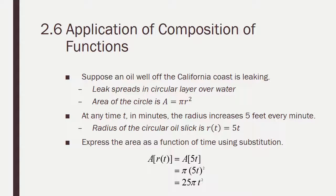Let's look at an application here. Suppose an oil well off the California coast is leaking. The leak spreads in a circular layer over the water. The area of the circle is pi r squared. At any time t in minutes, the radius increases by five feet every minute. So the radius of the circle of the oil slick is five t. Five feet times however much time has gone by. We're going to express the area as a function of time using the substitution. So what we're going to do, it's going to be a of r of t. r of t is 5t, so we're going to do a of 5t. That means we're going to replace r with 5t. So we get pi times 5t squared, or 25 pi t squared.